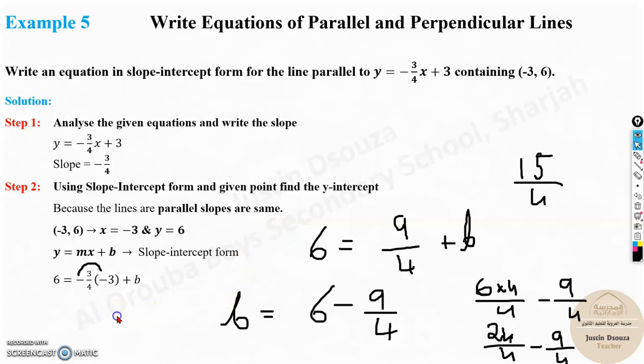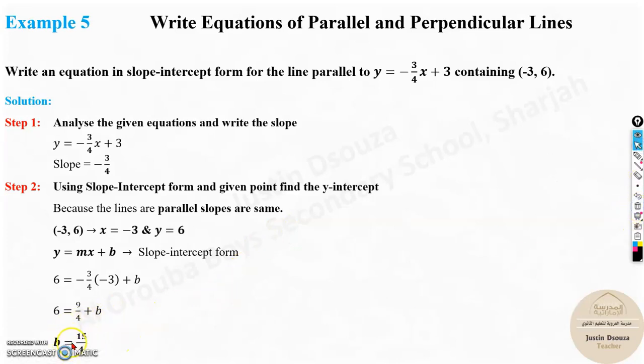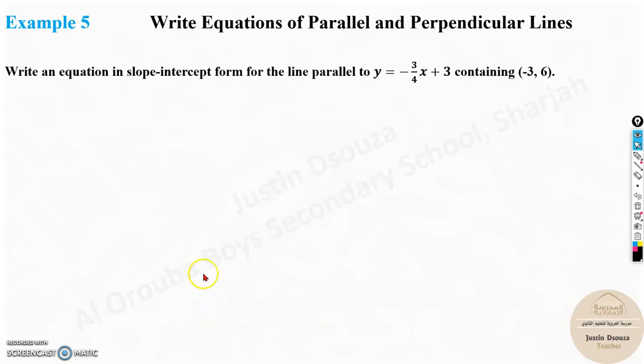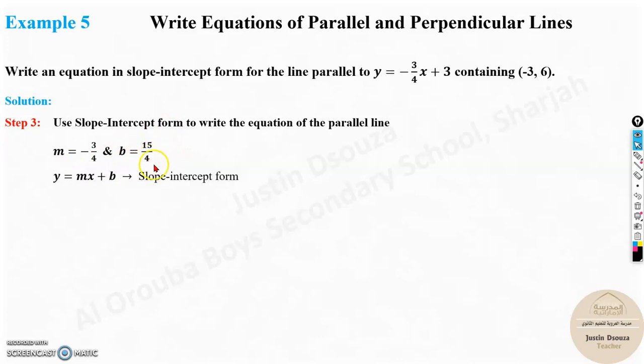So over here the b value is 15 by 4. So that's about 3.75. Now we have to write it in the slope intercept form. We know the slope. We know the y intercept and all you need to do is put it in the slope intercept form. y equals minus 3 by 4x plus b. So this is the answer.